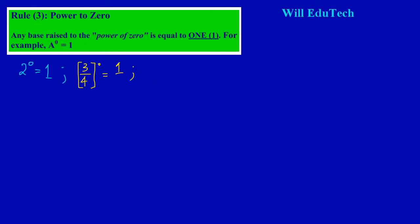Even if you have a variable — not just numbers — p raised to the power of zero is also equal to one. Or even a decimal: 0.34 raised to the power of zero is also equal to one. Whether it's a number, letter, variable, fraction, or decimal, once it is raised to the power of zero, the answer is one.